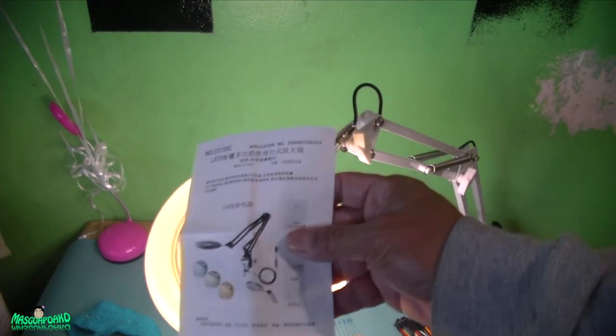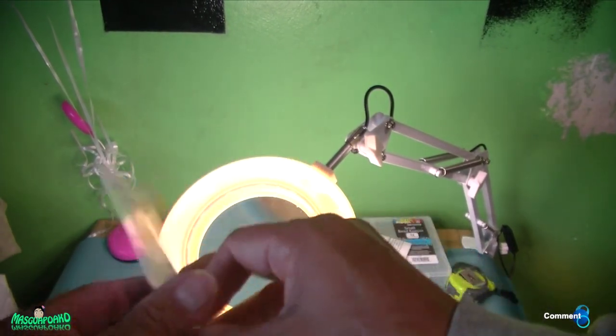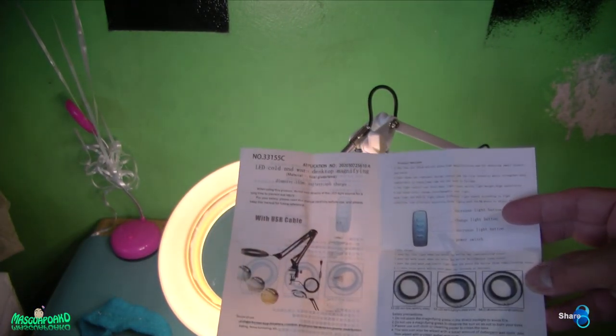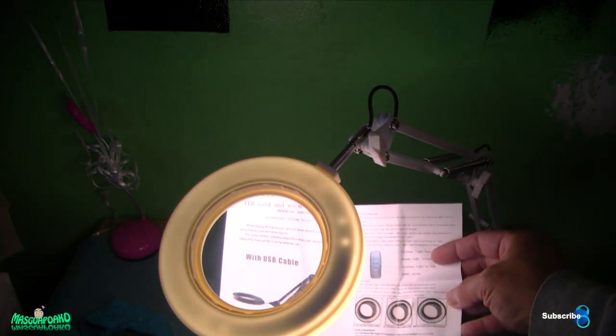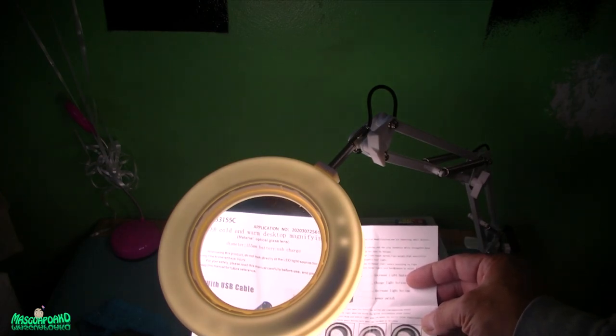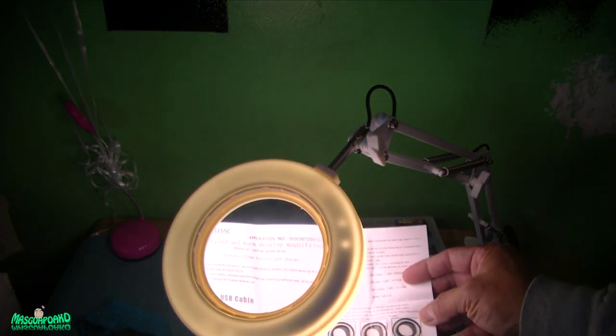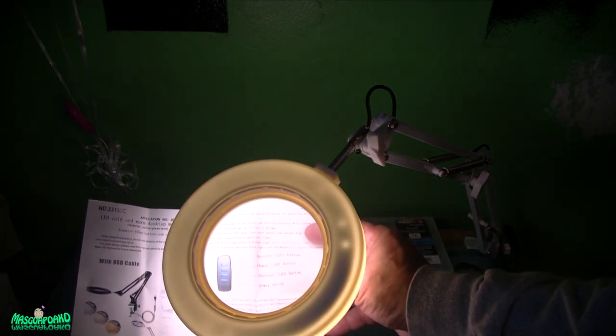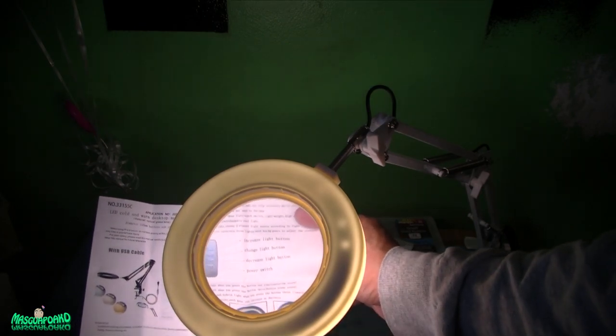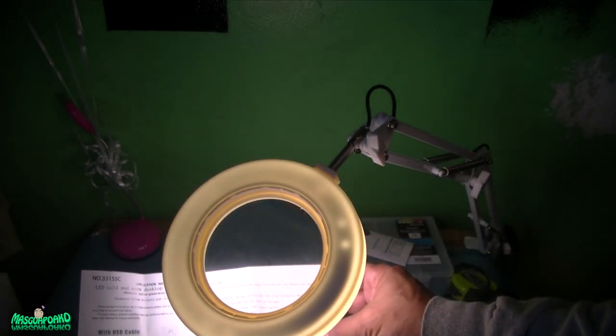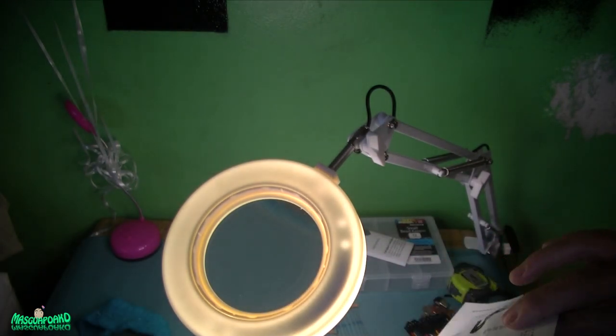Now for the magnifying part. Here's the manual by the way, it's in Chinese and English. It says LED cold warm desktop magnifier. Material is optical glass. I think this glass looks like plastic to me. It has increase light button, change light button, decrease light button, and power switch. It has decent instructions, understandable.